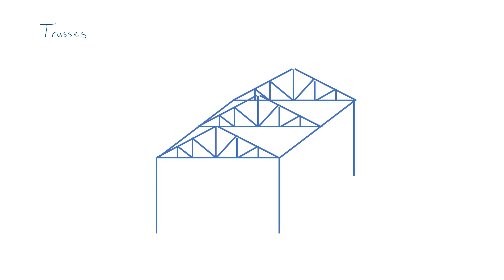Roof trusses normally are spaced uniformly along the length of the building and are tied together by longitudinal beams called purlins and by X bracing.